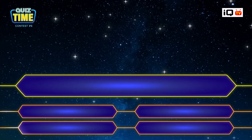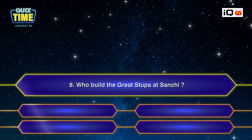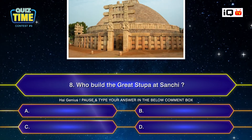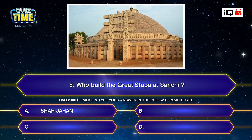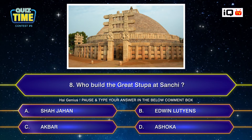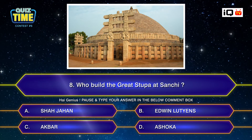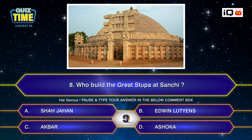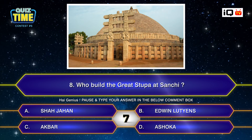Number eight: Who built the Great Stupa at Sanchi? A. Shah Jahan, B. Edwin Lutyens, C. Lakban, D. Ashoka. Your time starts now. Type your answer down.